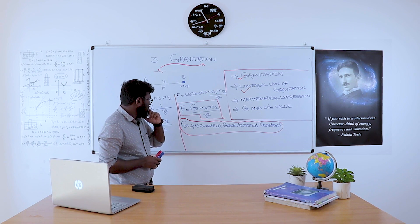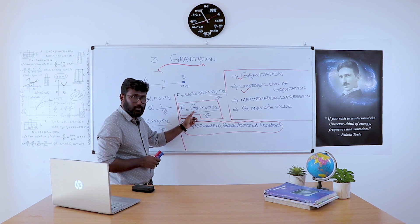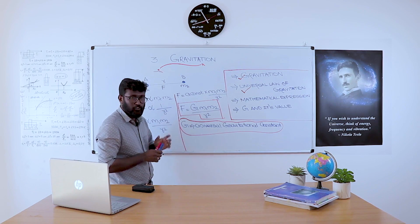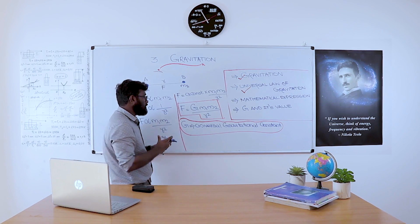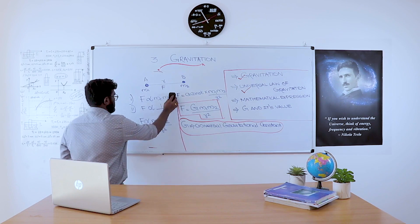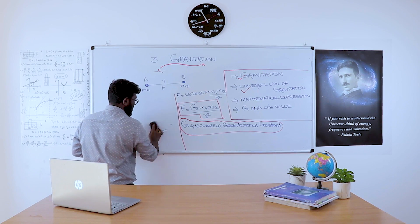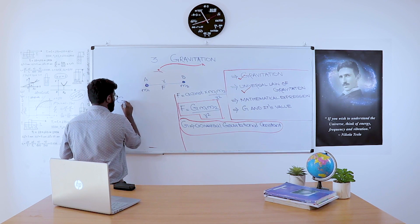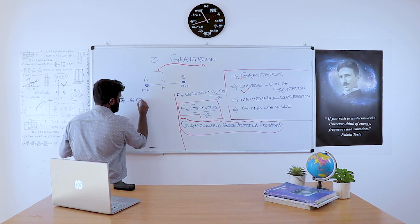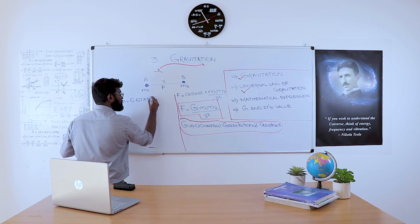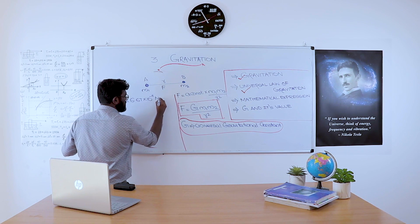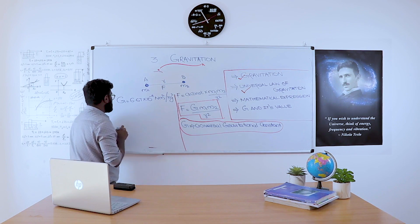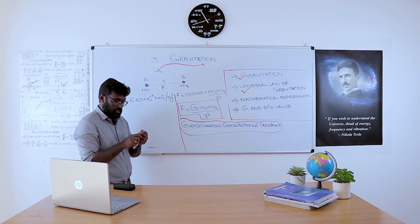It is clear that there is a proportionality constant G inside the equation, and we want to find out the value of G. The value of G is equal to 6.67 × 10⁻¹¹ Newton meter square per kilogram square.